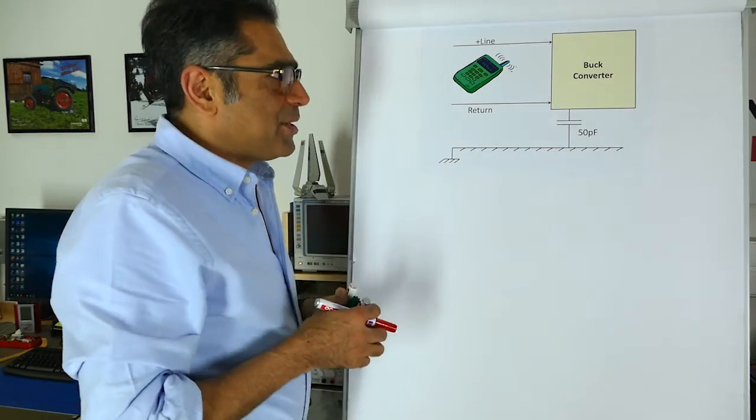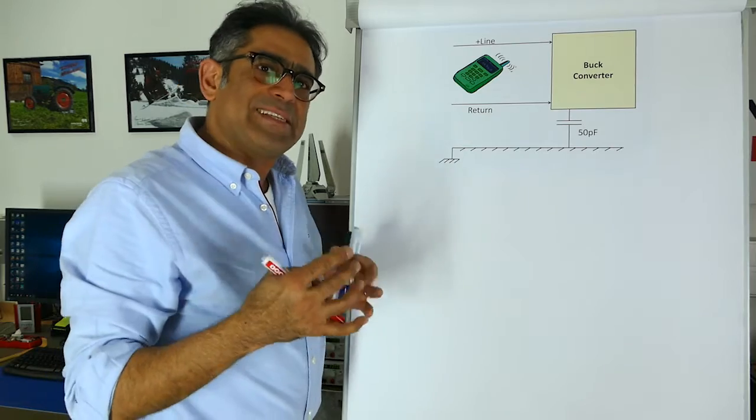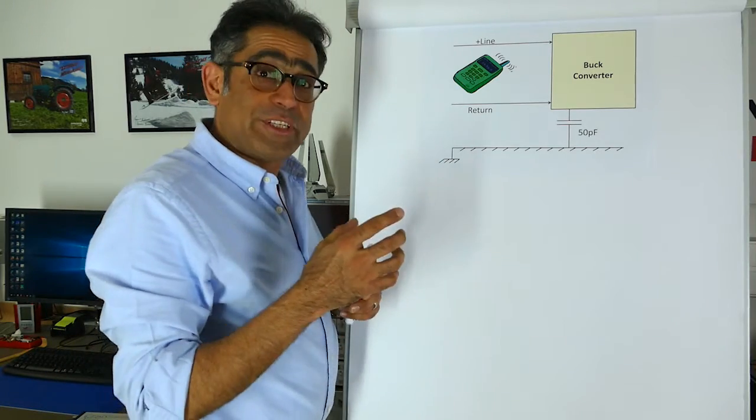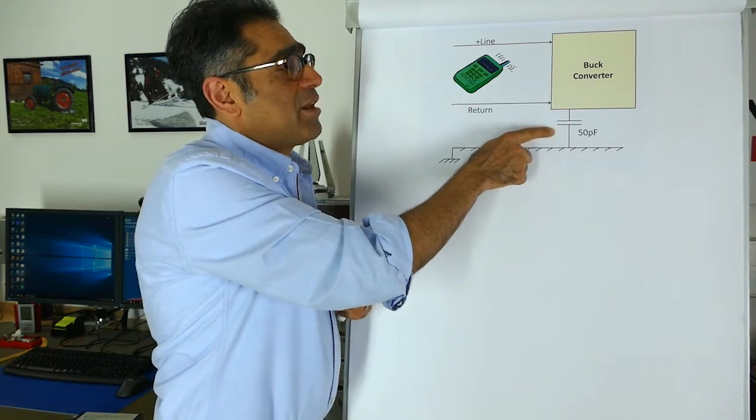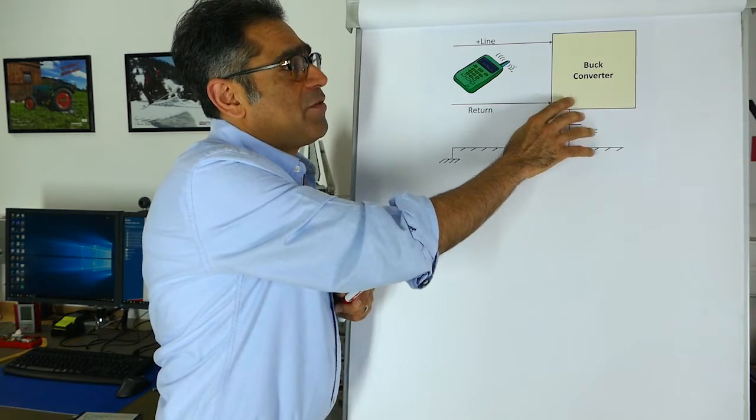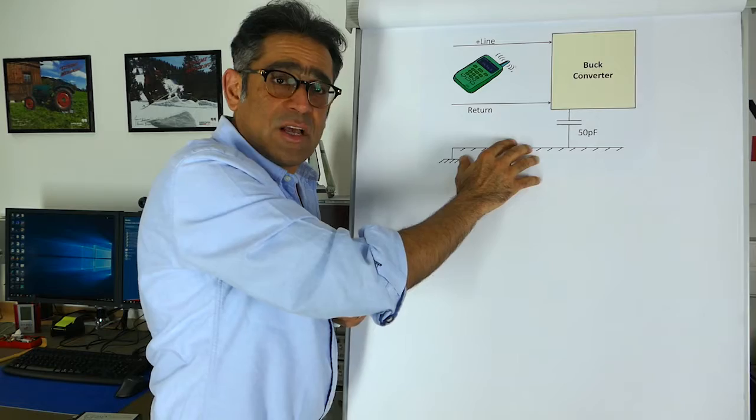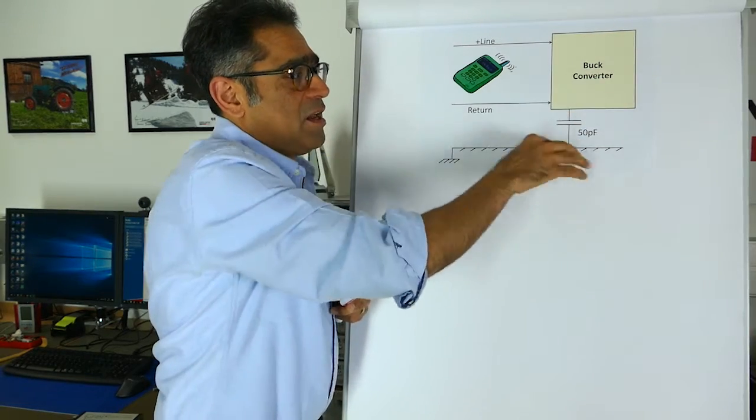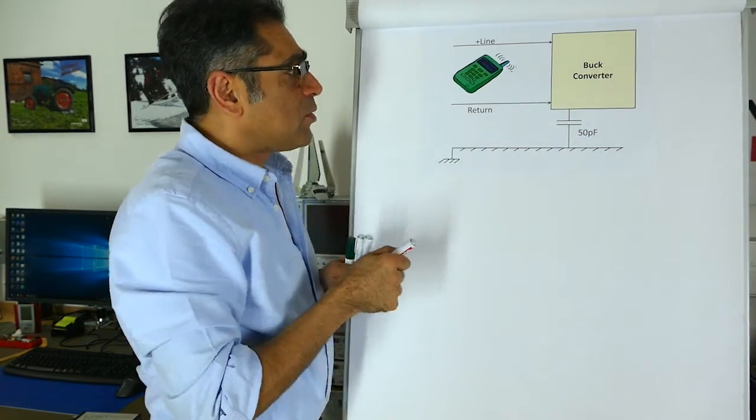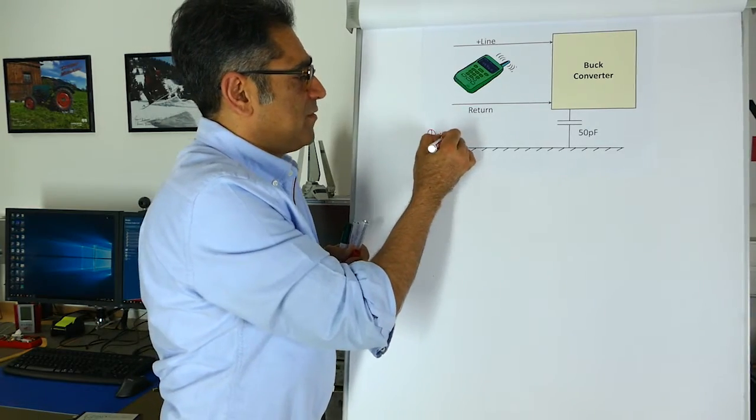Now imagine that I have got the same buck converter, and for simplicity let's say that I have soldered one 50 picofarad capacitor between the body of the buck converter down to the chassis of the product. So I've got a little bit of capacitance between the buck converter and the chassis. We call this protective earth.